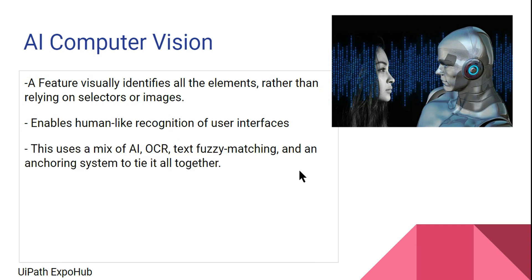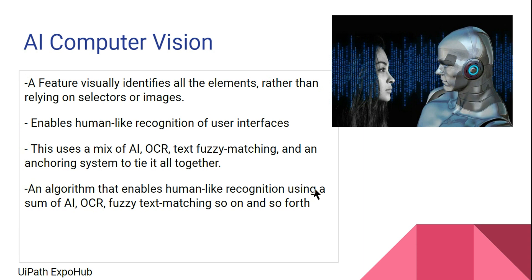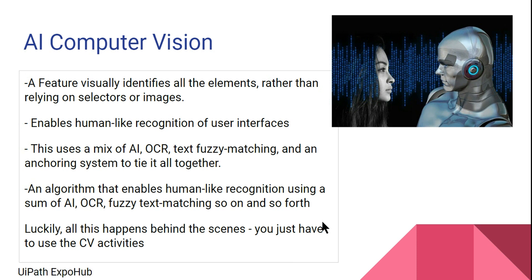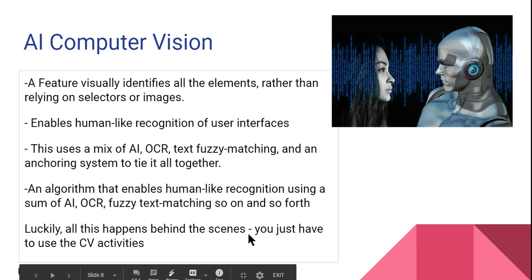AI Computer Vision uses a mix of artificial intelligence, optical character recognition, text fuzzy matching, and an anchoring system to tie it all together. There is a complex algorithm in the background — your data is sent to a server, calculations happen there, and you get the output in UiPath. So you need an internet connection for that immediate calculation and to get the result back. The algorithm enables human-like recognition using all of these components, and it all happens in the background.